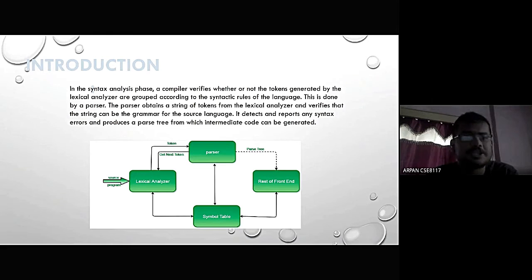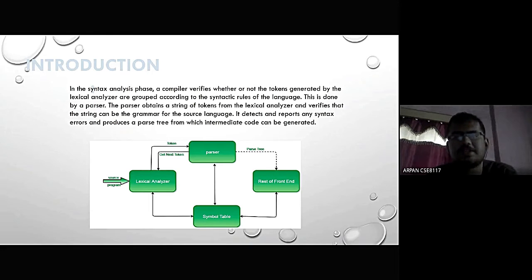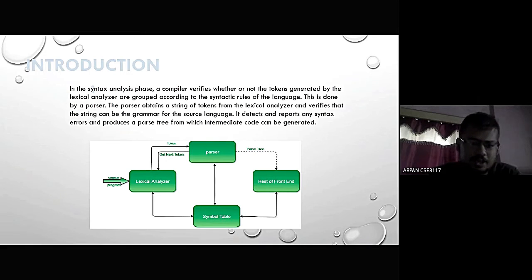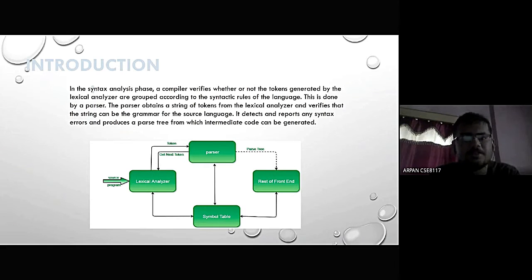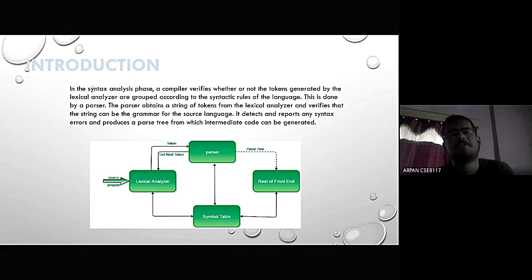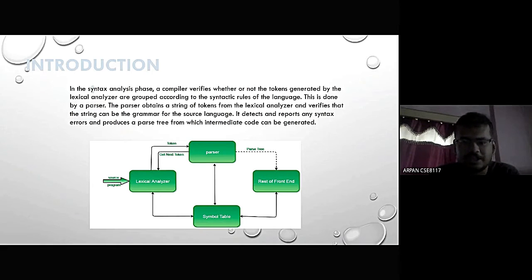The parser detects and reports any errors and produces a parse tree from which intermediate code can be generated. The source language is fed to the lexical analyzer, which finds the tokens and sends them to the parser. The parser then forms a parse tree and sends it to the rest of the frontend.